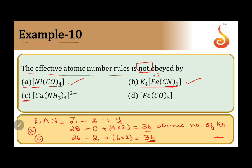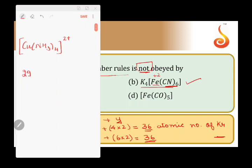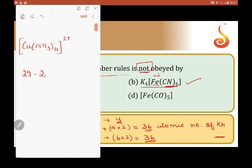Coming to option C, [Cu(NH3)4]2+. The atomic number of copper is 29. It is in plus 2 oxidation state, so let us reduce 2 electrons. It is gaining 4 electron pairs, so 4 into 2. The answer here comes to be 35.